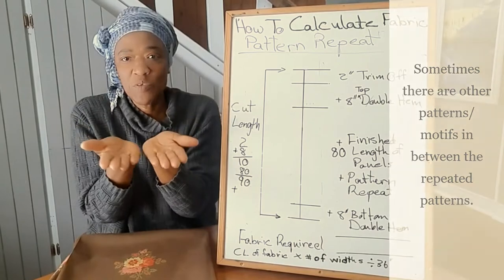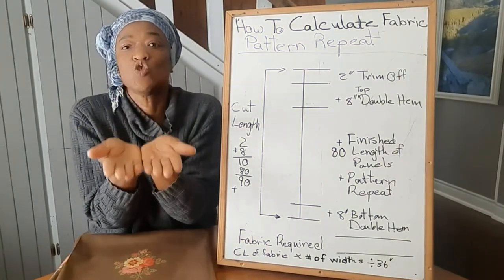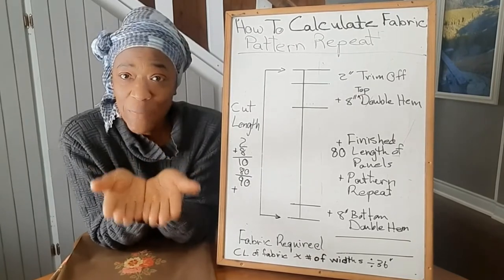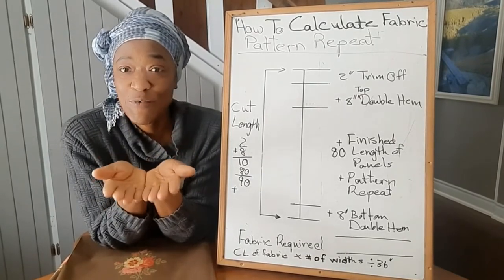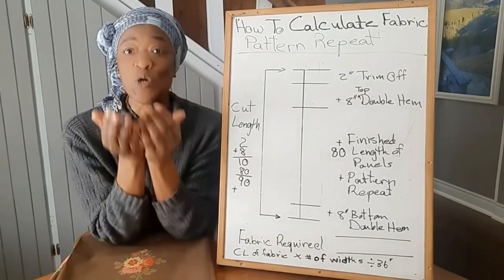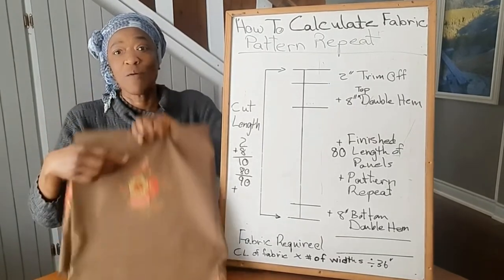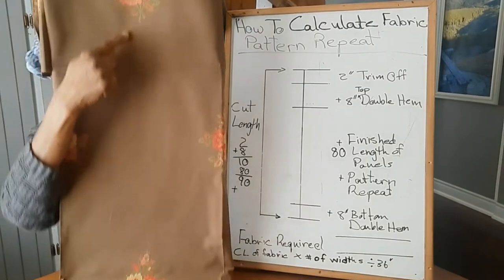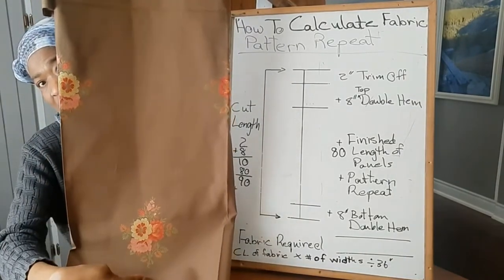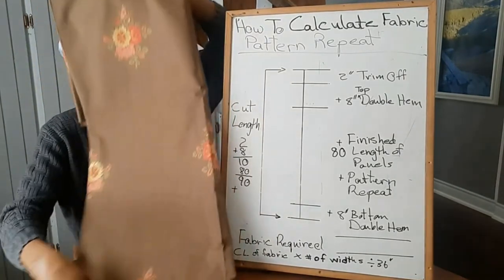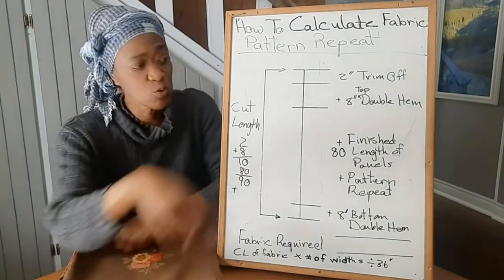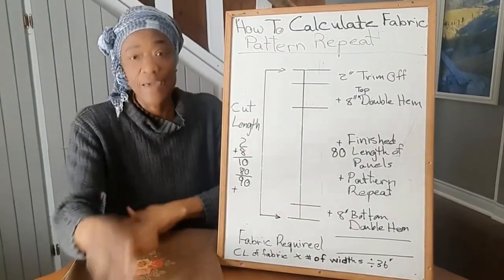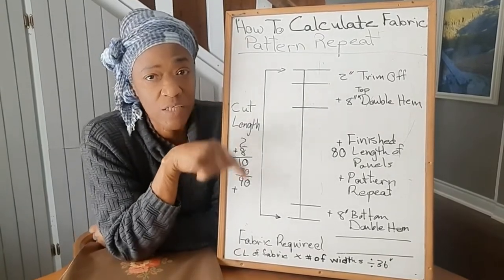And that is specifically because you need to get the correct amount of fabric so that you can match up your patterns when you join panels. Now how do you measure for the pattern repeat? You measure from the top of one pattern to the bottom of the other pattern, and I will go ahead and do the example on the board so you can see exactly how to do your calculations.